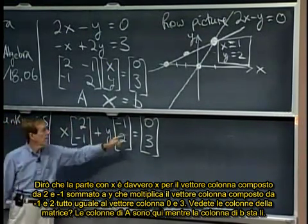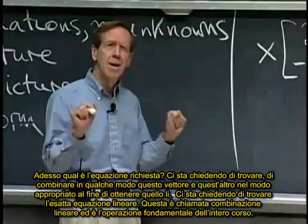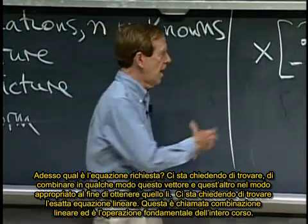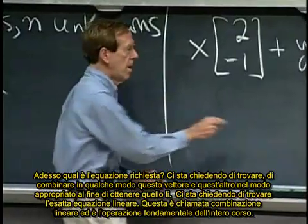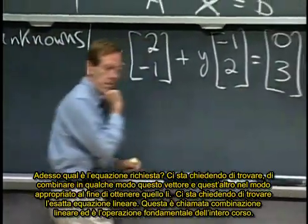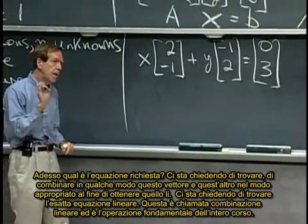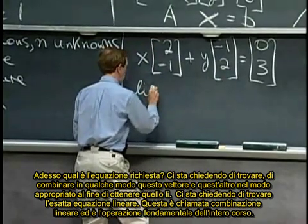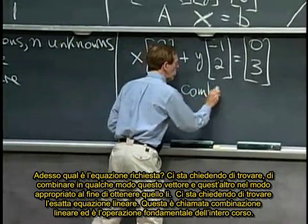You see the columns of the matrix? The columns of A are here, and the right-hand side b is there. And now what is the equation asking for? It's asking us to find, somehow to combine that vector and this one in the right amounts to get that one. It's asking us to find the right linear combination. This is called a linear combination. And it's the most fundamental operation in the whole course.